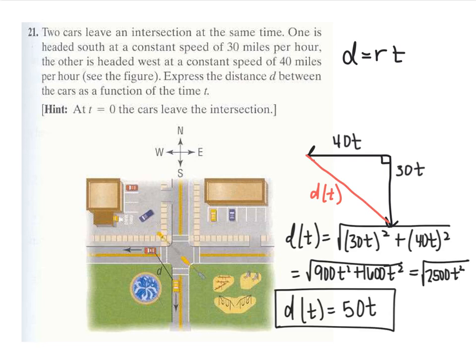This creates a right triangle, so using the Pythagorean theorem: d equals the square root of (30t) squared plus (40t) squared. You might recognize this as a 3-4-5 right triangle scaled by 10, giving 30-40-50, or you can work through the full calculation. Either way, the distance with respect to time equals 50t — these two cars are always 50 times t miles apart.